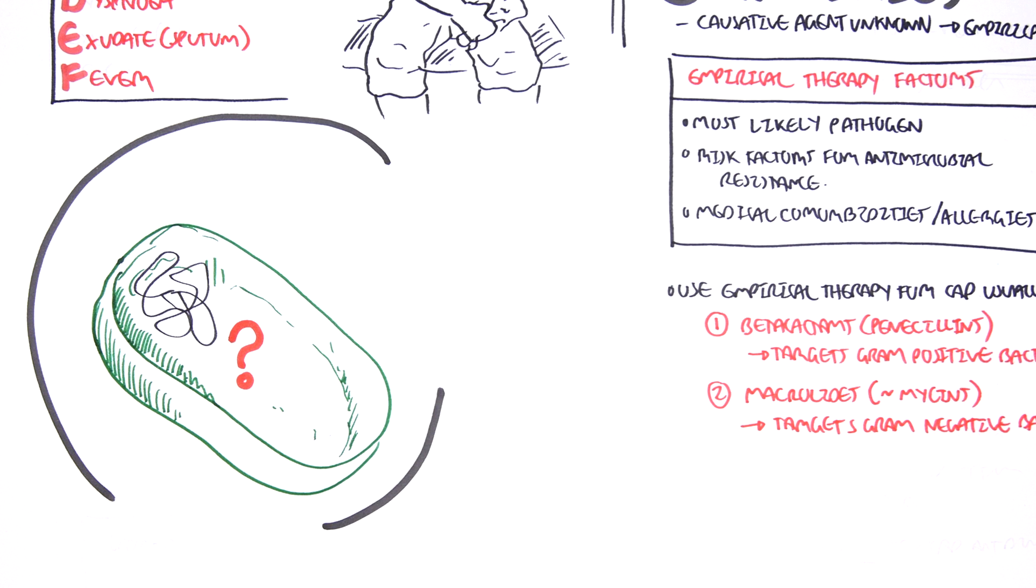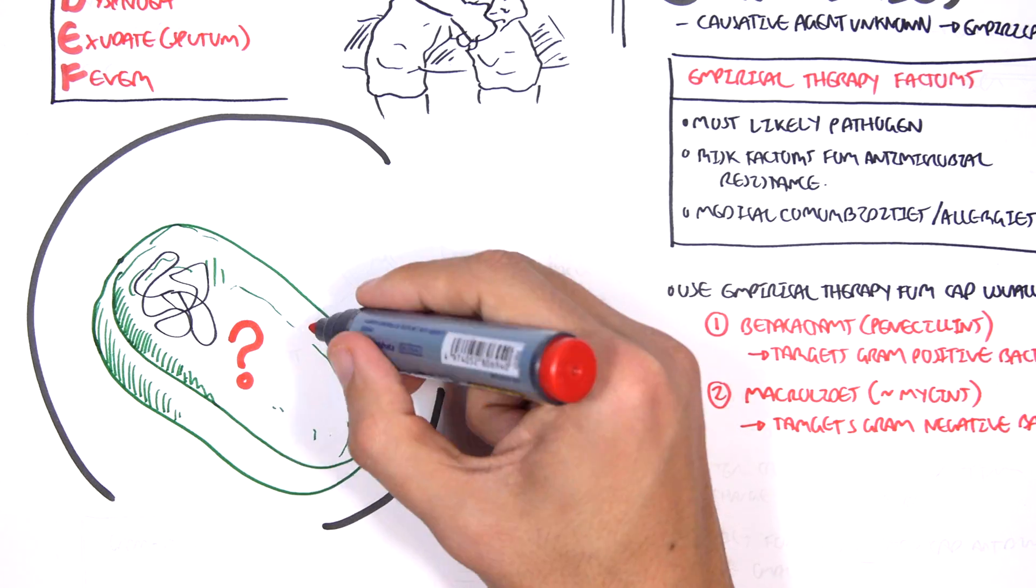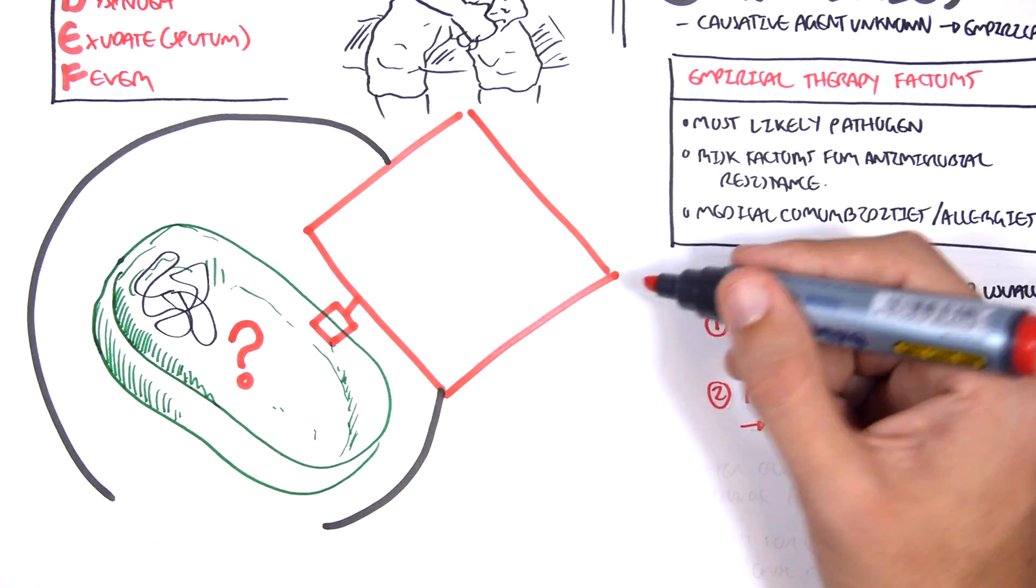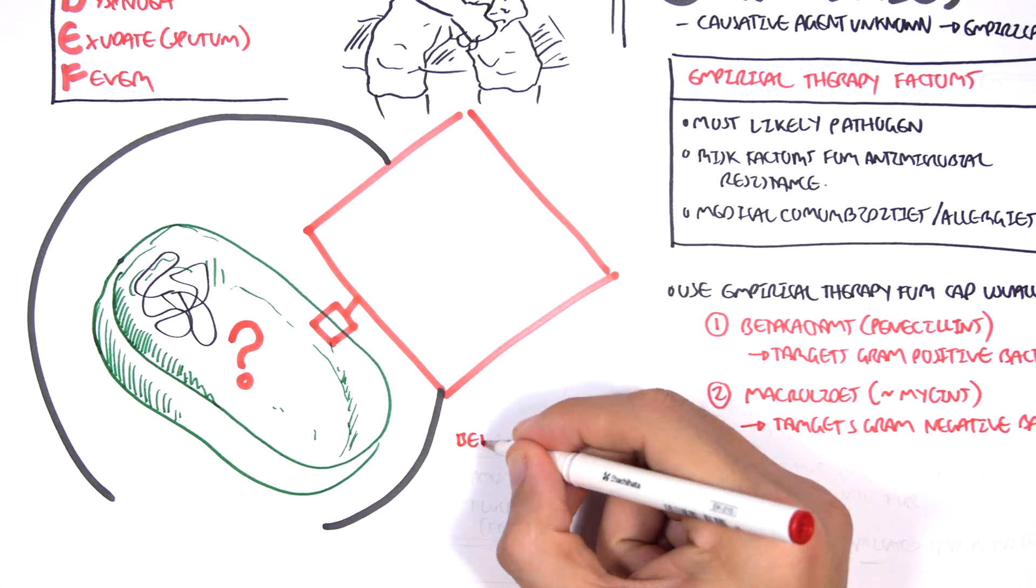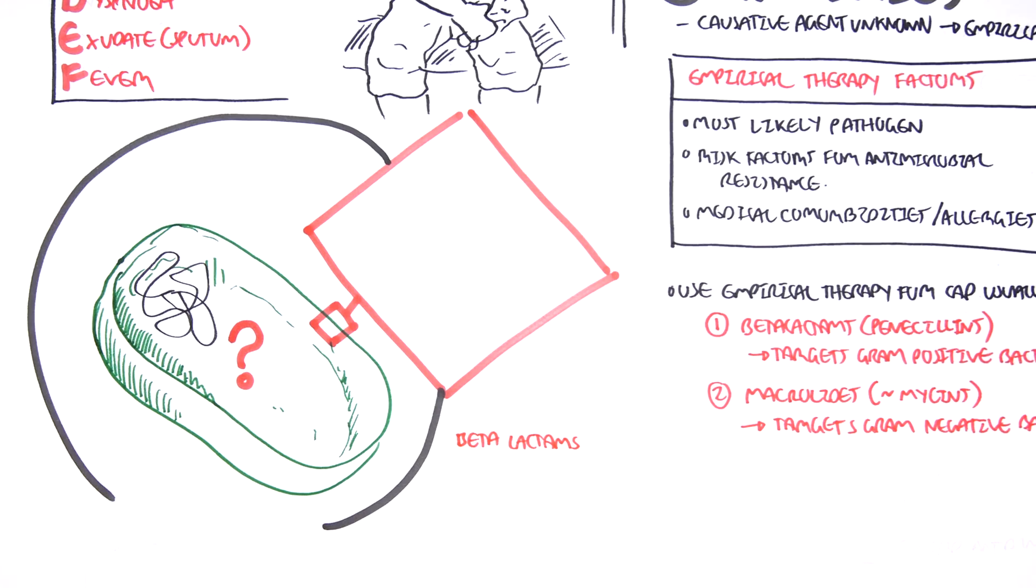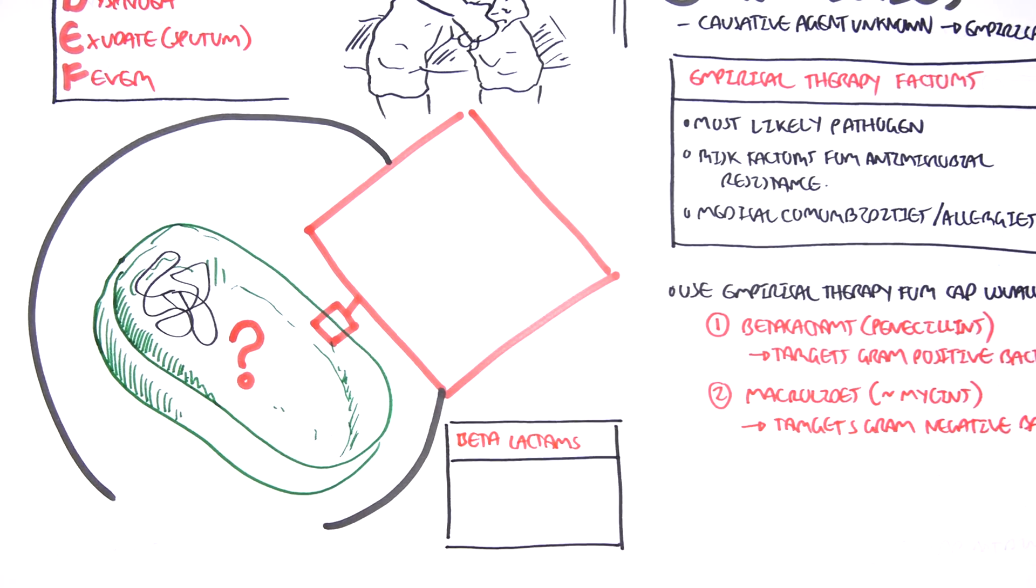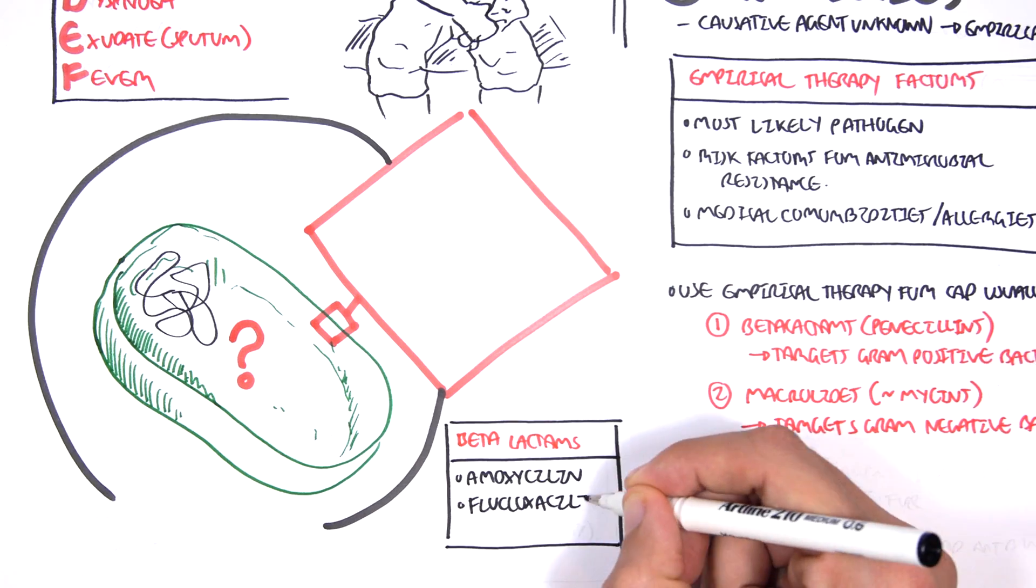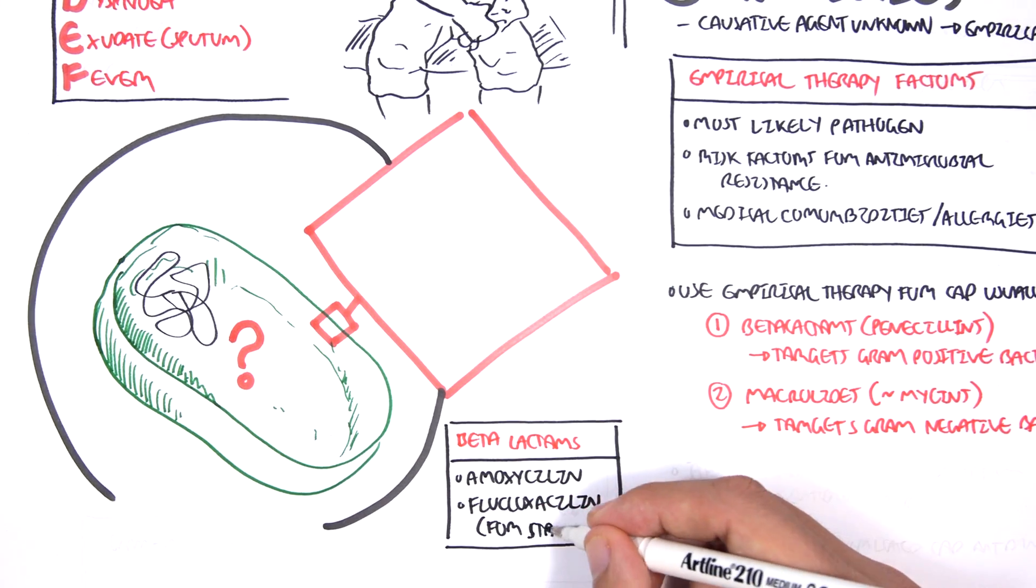Now beta-lactams, essentially what they do is they target the cell wall of the bacteria, which is essentially made up of peptidoglycan. The beta-lactams used for pneumonia include amoxicillin and flucloxacillin, specifically targeting staph species.